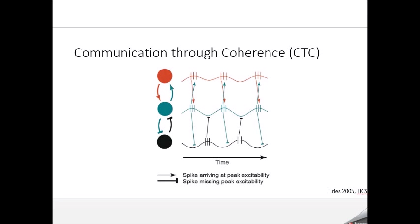So why is phase, and specifically coherence, important? There's a popular theory today called communication through coherence, which was popularized by Pascal Fries in a paper about a decade ago. He hypothesized that if two neural populations — indicated here by circles of different colors — are synchronized, then they can better communicate with each other.